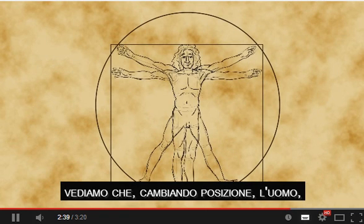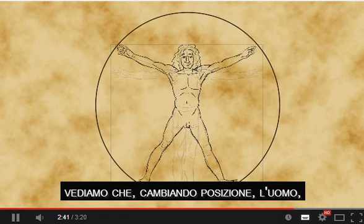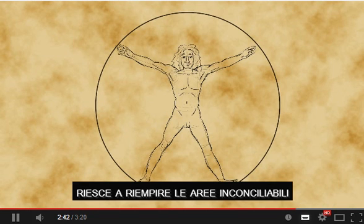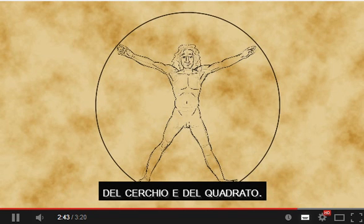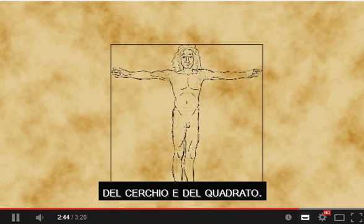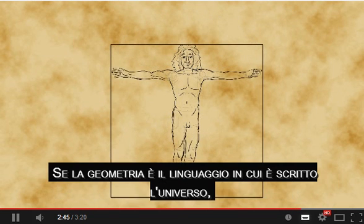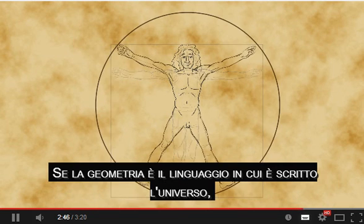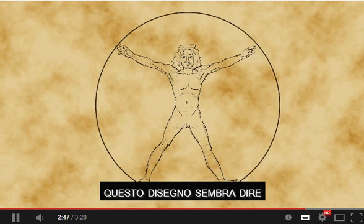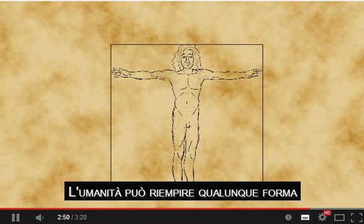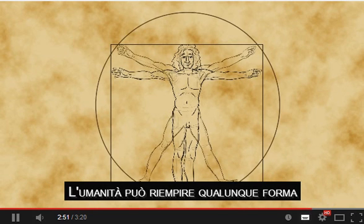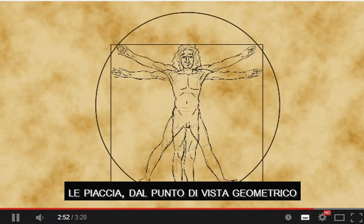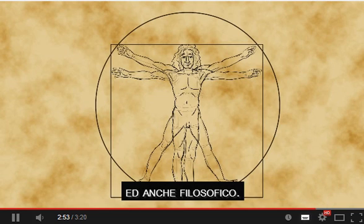Looking back at the sketch, we can see that by changing the position of the man, he can fill the irreconcilable areas of a circle and a square. If geometry is the language the universe is written in, then this sketch seems to say we can exist within all its elements — mankind can fill whatever shape he pleases, geometrically and philosophically as well.